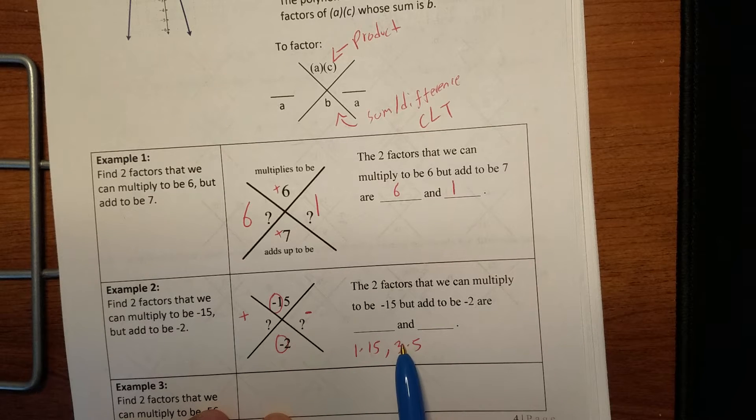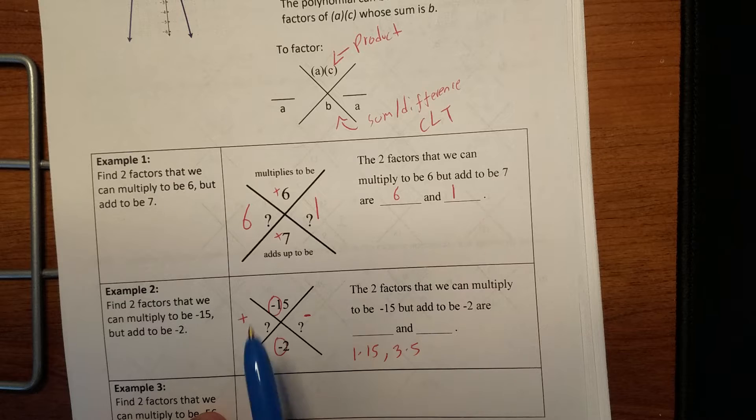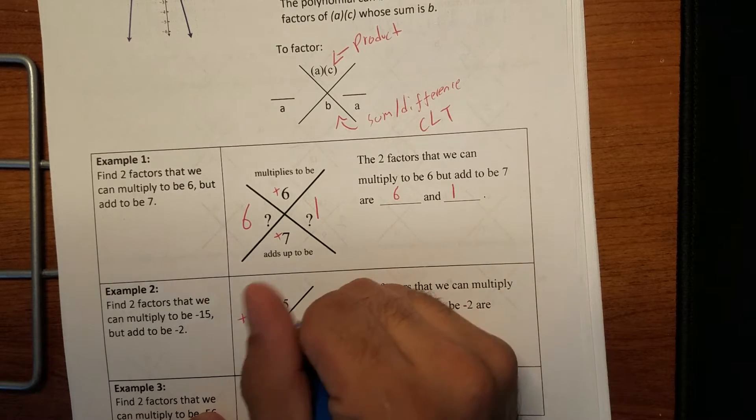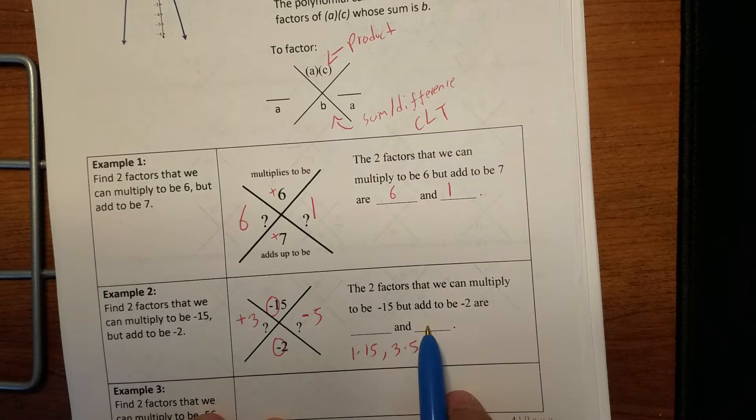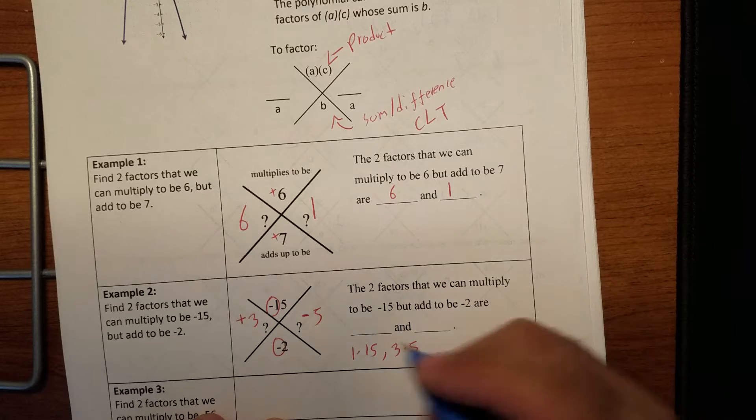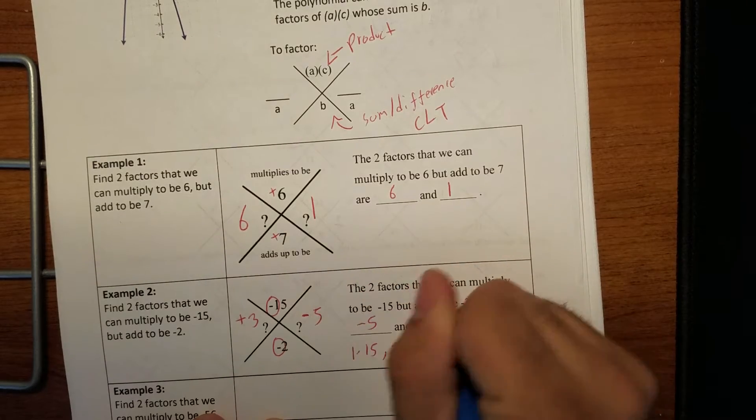If we try five and three, it's going to work out, and I want the bigger number to be negative, because after we combine them, we have a negative remainder. So we're going to say negative five, positive three. So our two numbers that we're looking for is negative five and three.